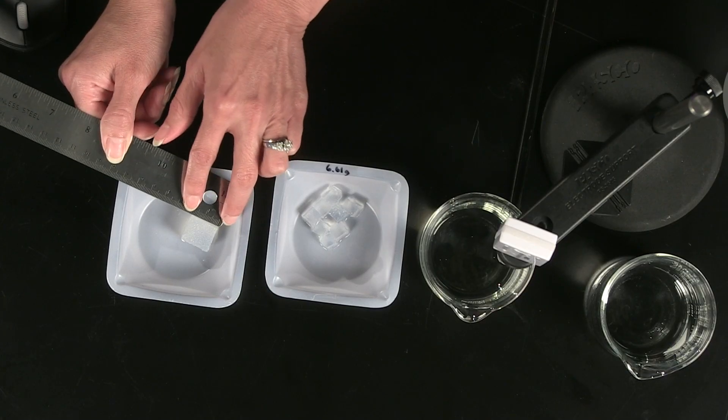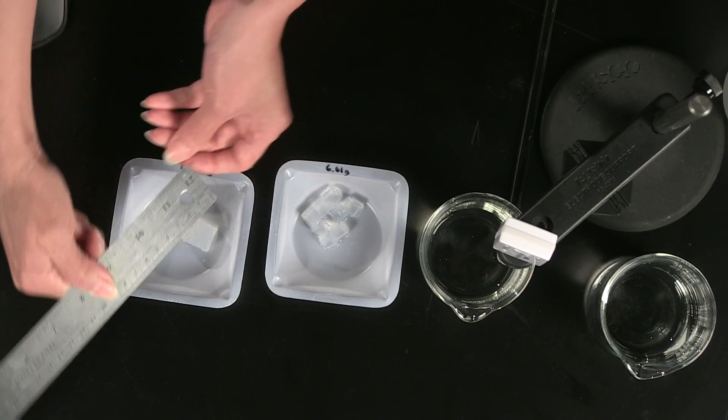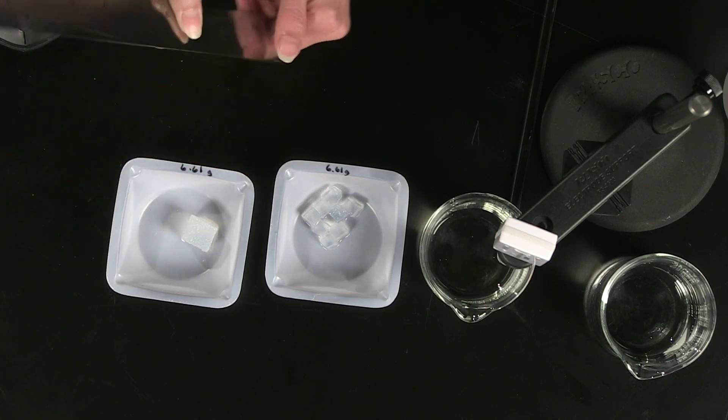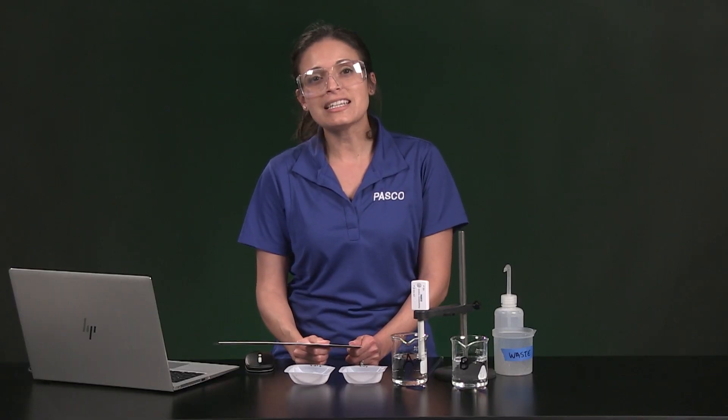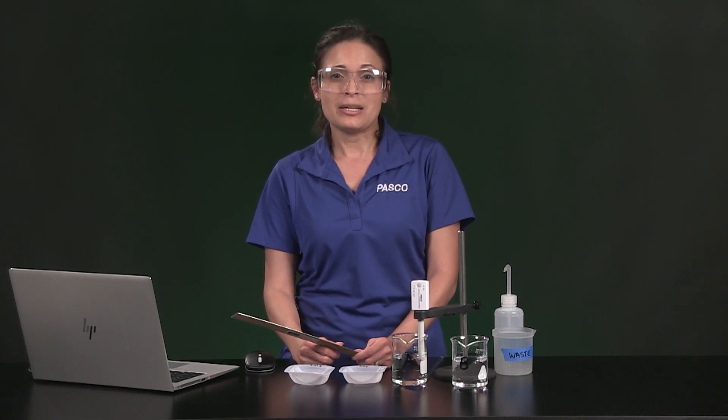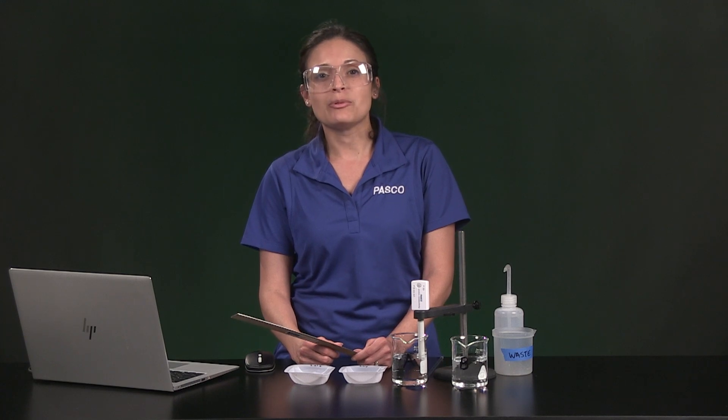Sample A is a 2 by 2 by 2 cm cube. You will also need to calculate this cube's volume, which is length times width times height, and enter it in Table 1.